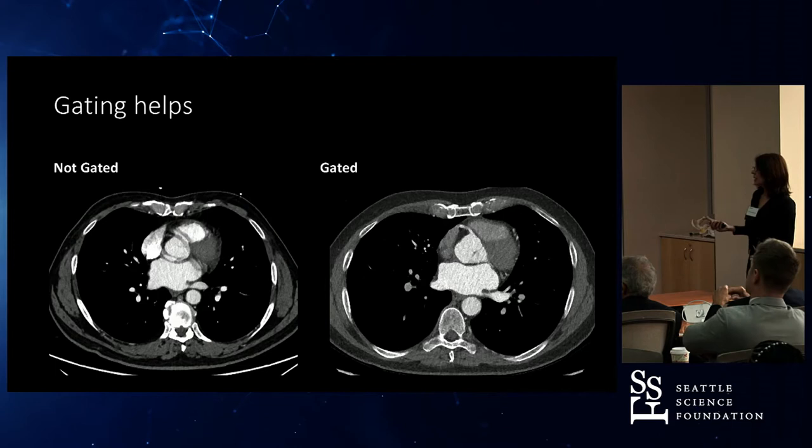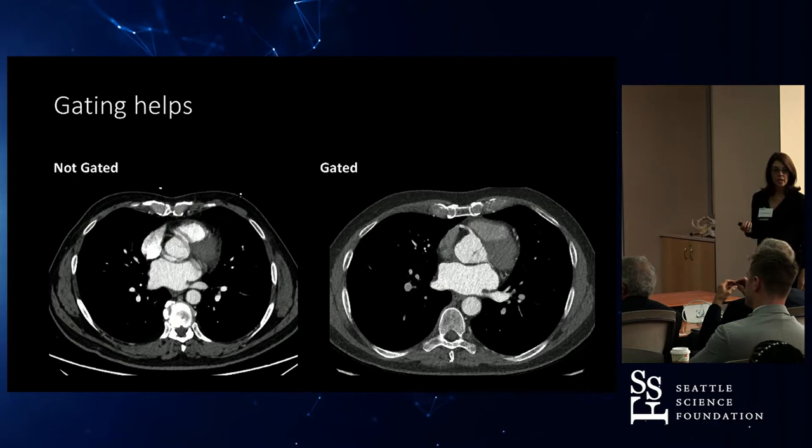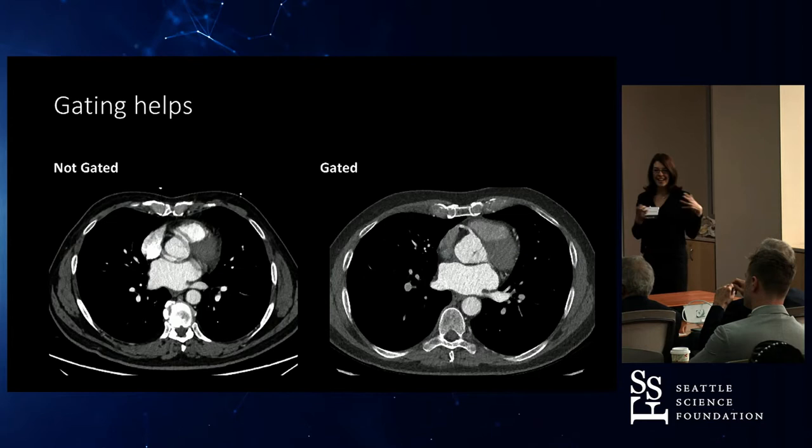Here you can see the aorta, and you can really nicely see the takeoff of the right coronary artery. So that's some of the difference. There will also be a quiz here in the middle and at the end. Can you say what gating means? What does it mean, technically?